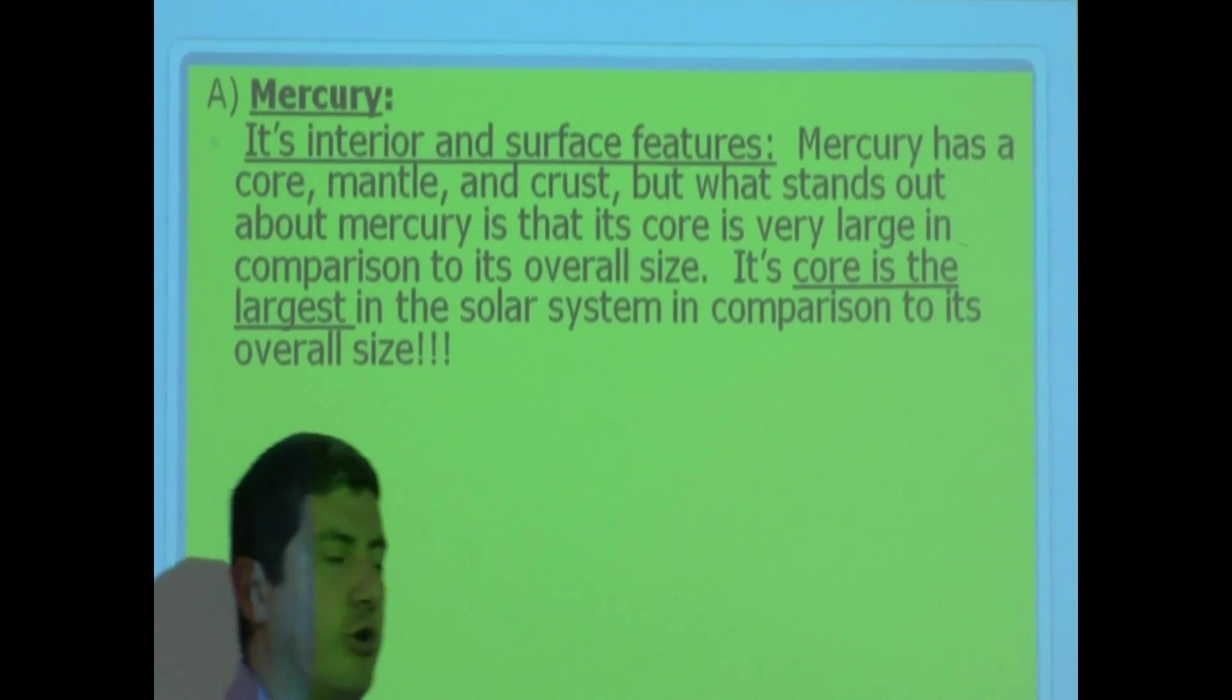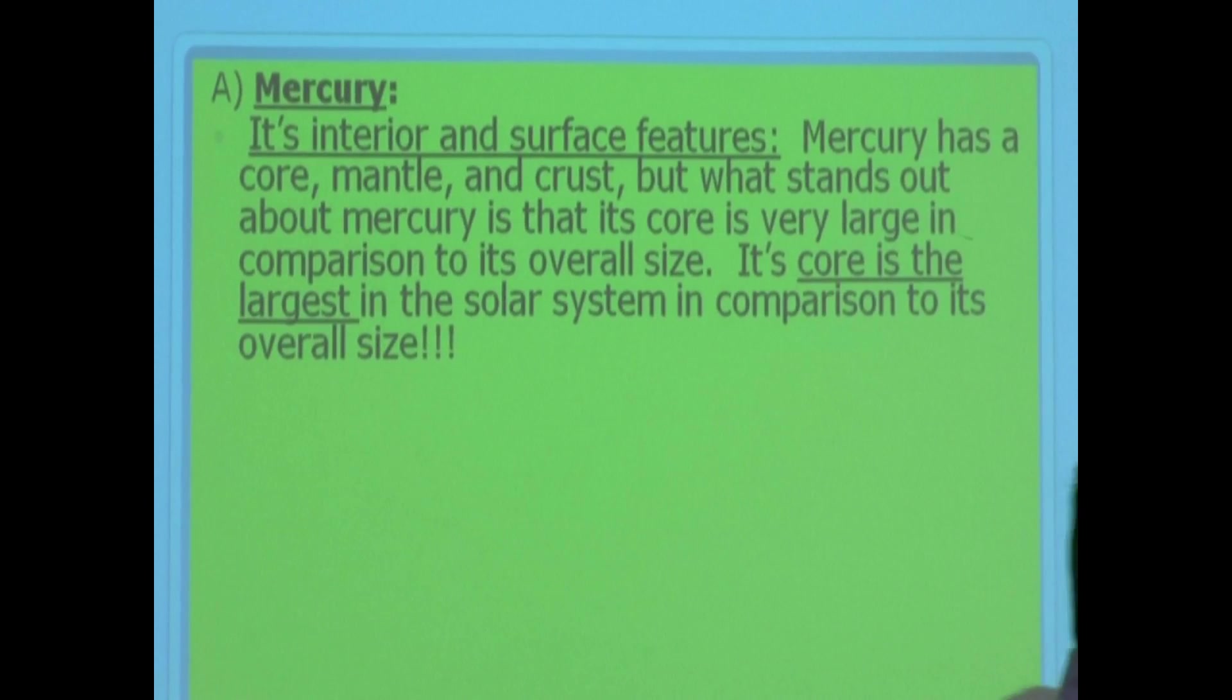Let's go over the planets and some major information about them, specifically the interior and surface features. Mercury has a core, mantle, and crust, but what stands out about Mercury is that its core is very large in comparison to its overall size. Most of its interior is the core.